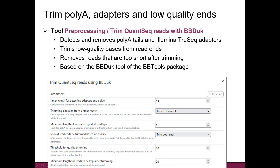Then we need to trim the poly-A tails and adapters. This tool also trims low-quality bases from read ends, and after all this trimming, it checks that the reads are still sufficiently long. It is based on the BBDuck tool. The parameter for the minimum length for reads to be kept after trimming is 20.